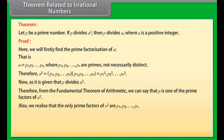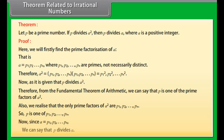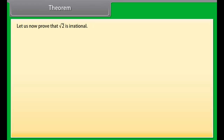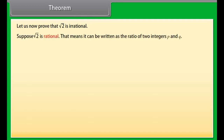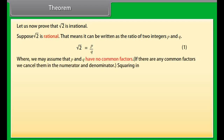A squared equals P1 squared × P2 squared × ... × Pn squared. Now, since P divides A squared, from the fundamental theorem of arithmetic, P is one of the prime factors of A squared. The only prime factors of A squared are P1, P2, ..., Pn. So P is one of P1, P2, ..., Pn. Since A equals P1 × P2 × ... × Pn, we can say that P divides A.